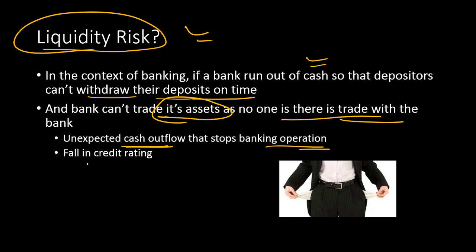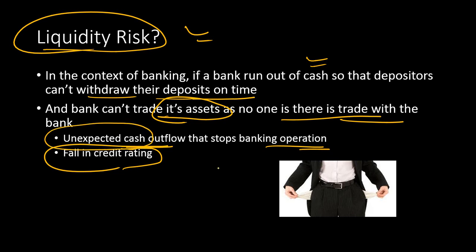Liquidity risk can be triggered when a credit rating agency downgrades a bank's credit rating. People lose trust, speculate the bank will go bankrupt, and panically withdraw their money. This causes unexpected cash outflows, leading to a full liquidity crisis for the bank.